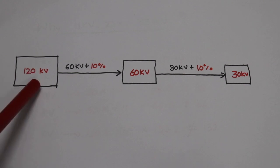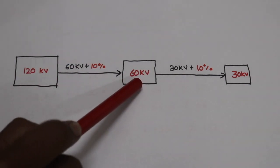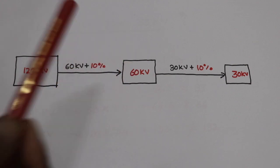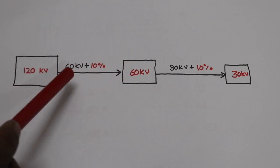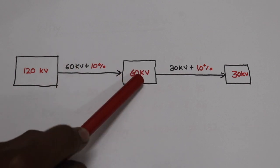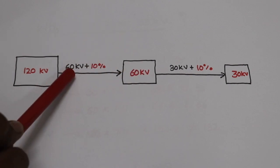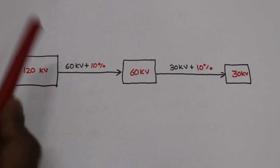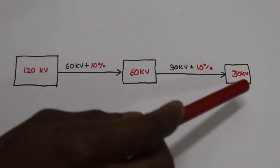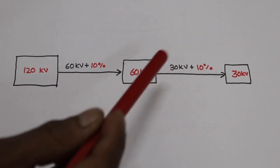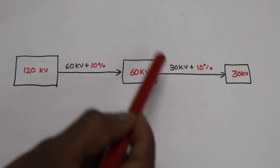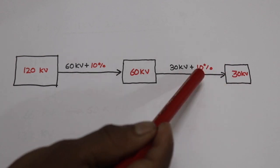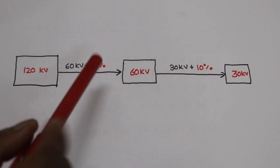This front is 60kV. The voltage is 66kV — this is 60kV. This is 30kV, and it is 33kV, plus 100kV.